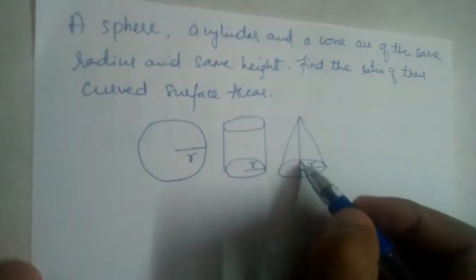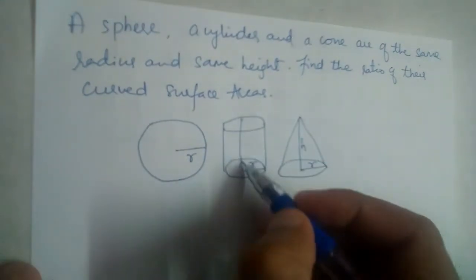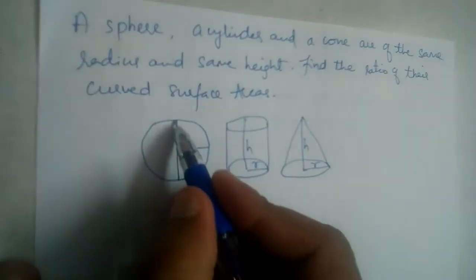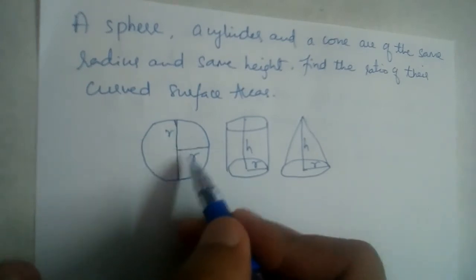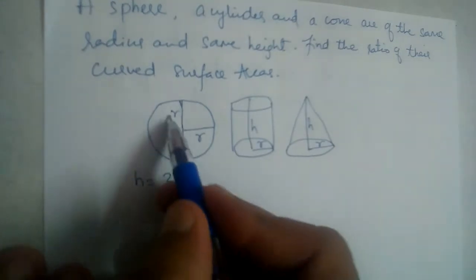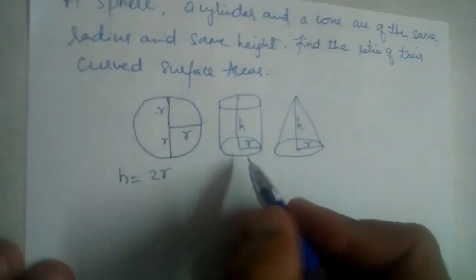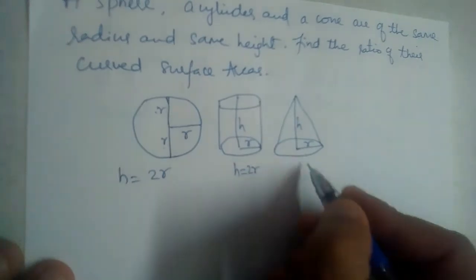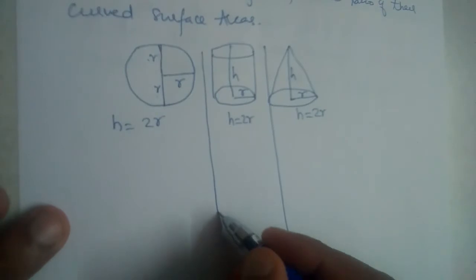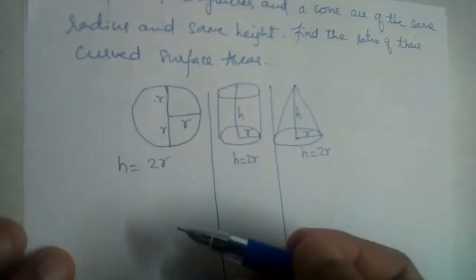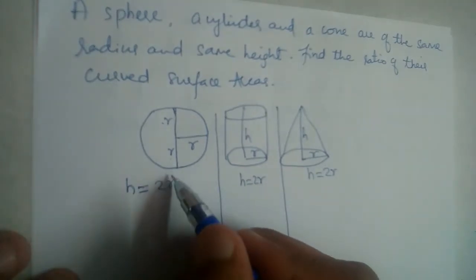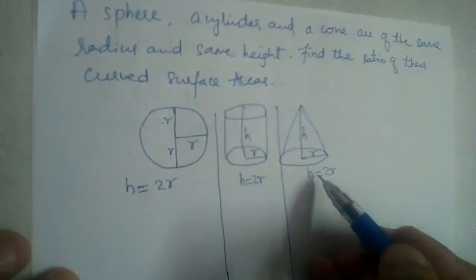The height is also the same for all three. The height of the sphere — since the radius is R, the diameter is R plus R, so the height is 2R. So height here will also be 2R and height here will also be 2R. So H is equal to 2R in all three cases.